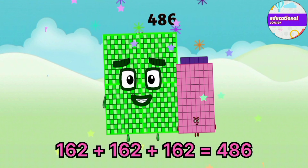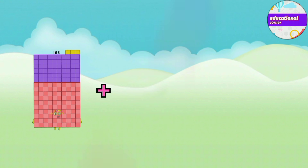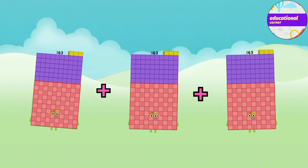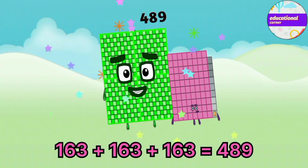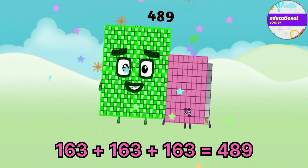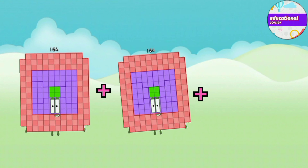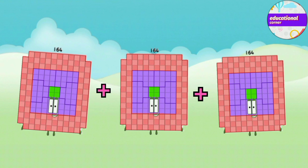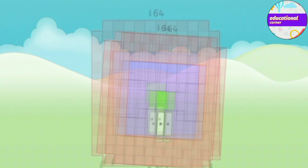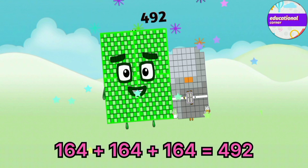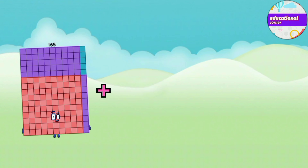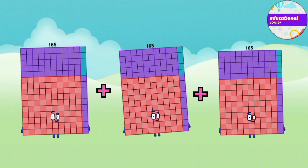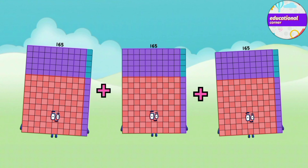163 plus 163 plus 163 equals 489. 164 plus 164 plus 164 equals 492.